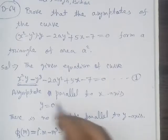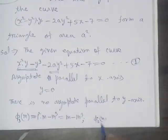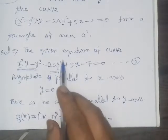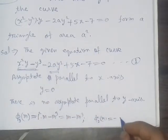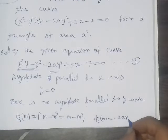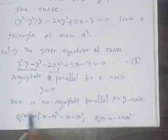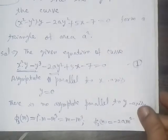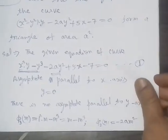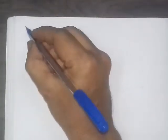The third-degree terms give us φ₃, and the second-degree terms give us φ₂. To find the slopes of the oblique asymptotes, we substitute x=1 and y=m in φ₃ to get the expression in terms of m. From the highest-power expression we can extract the slopes of the asymptotes.